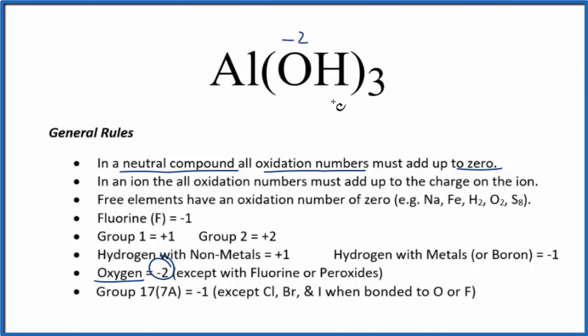Hydrogen bonded to nonmetals. Oxygen's a nonmetal. That's going to be +1. So we have -2 and +1. That gives us -1. Three times -1 is -3.